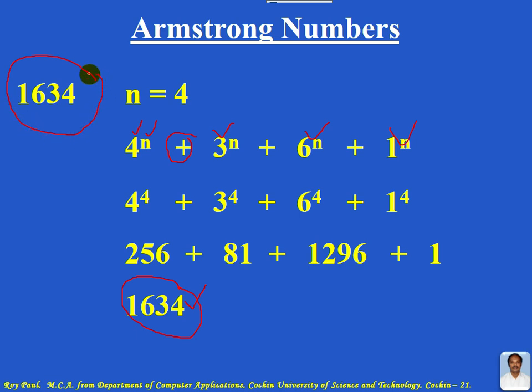So we can say that the sum of the nth powers of its digits equals that number, meaning this number is an example of an Armstrong number. We will write a Python program to check whether a number entered from the keyboard is an Armstrong number or not.